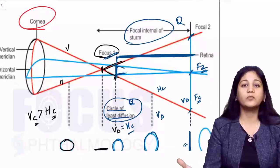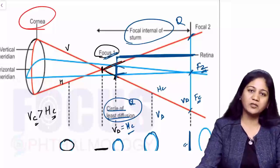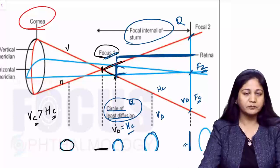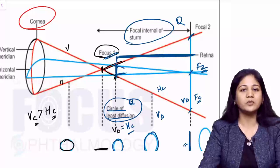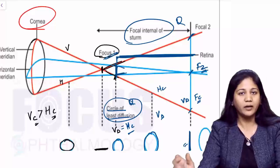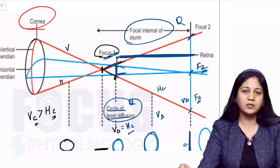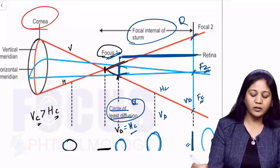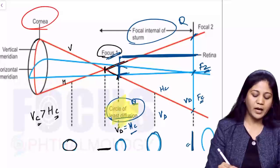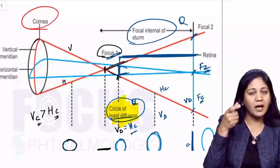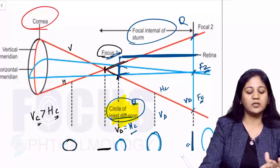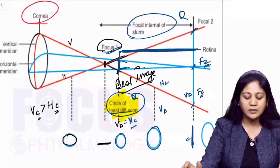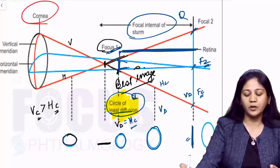The clinical application of Sturm's Conoid relates to astigmatic refractive error. When a patient has astigmatism, they need cylindrical or toric glasses. When we prescribe glasses, we want the patient to have a fine, clear image. To achieve this, the Circle of Least Diffusion should fall on the retina. We place the glass at such a level that the Circle of Least Diffusion forms at the retina — this is where the patient gets the best image.